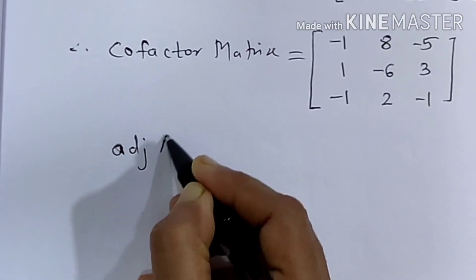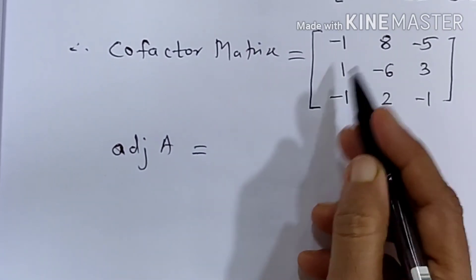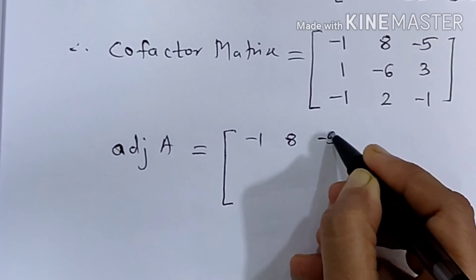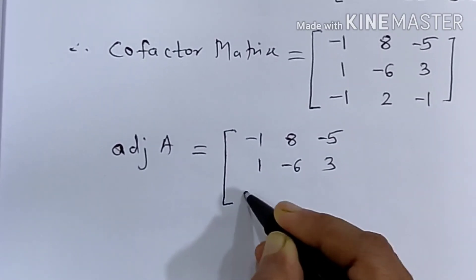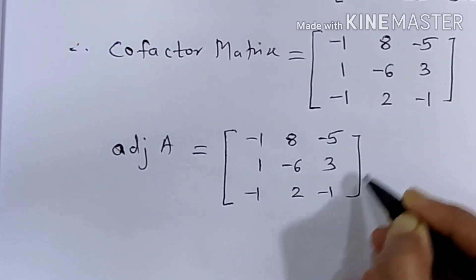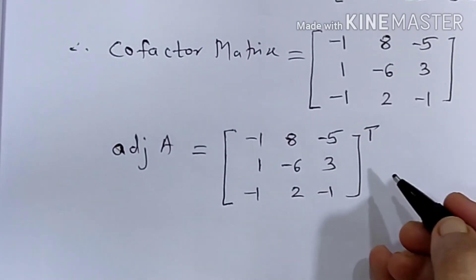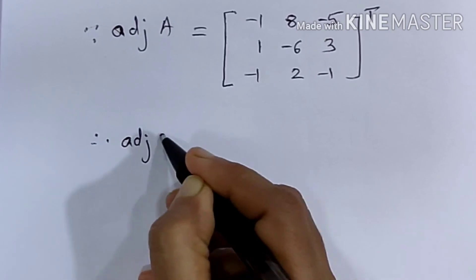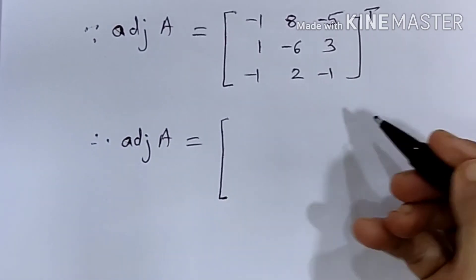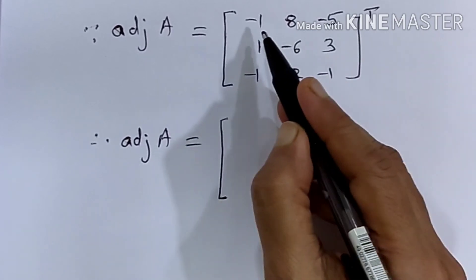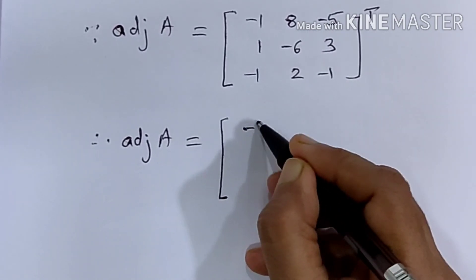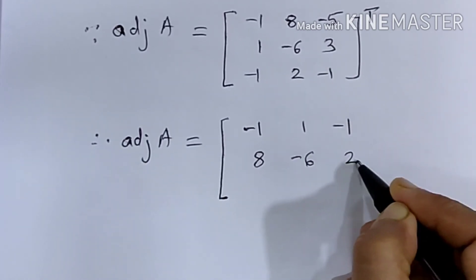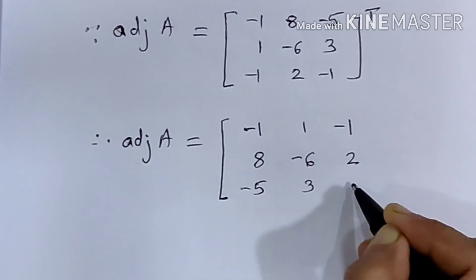The adjoint of A is equal to the transpose of the cofactor matrix. The cofactor matrix is: [−1, 8, −5; 1, −6, 3; −1, 2, −1]. Taking the transpose — interchanging rows and columns — the adjoint of A becomes: first row minus 1, 1, minus 1; second row 8, minus 6, 2; third row minus 5, 3, minus 1.